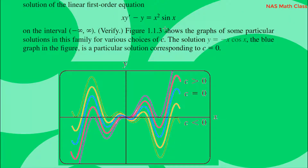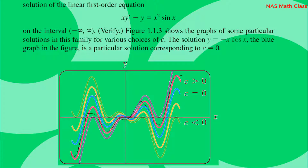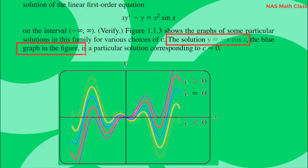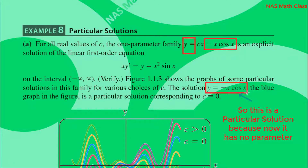Figure 1.1.3 shows the graph of some particular solutions in this family for various choices of c. For example, when c = 0, the solution becomes y = -x·cos(x), which is shown as the blue graph in the figure. We can use a graphing tool to visualize the solution curves for different values of c.